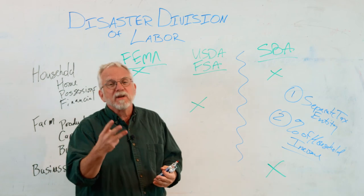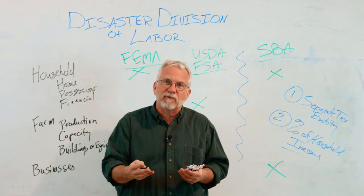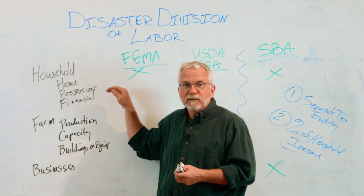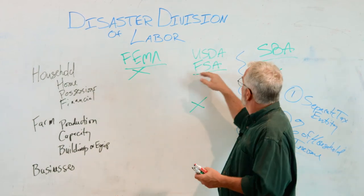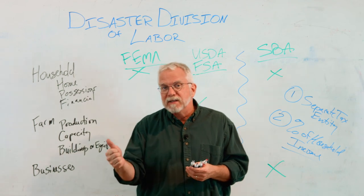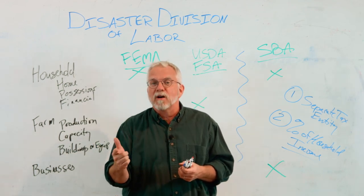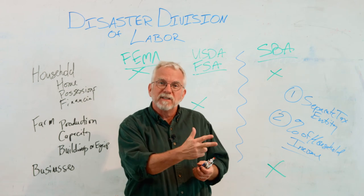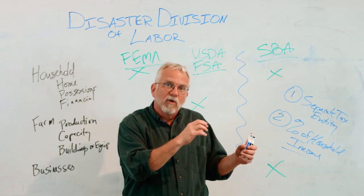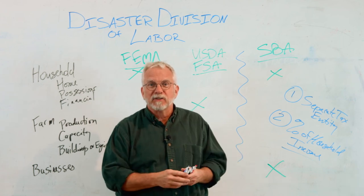To review: the three main agencies after a disaster are going to be FEMA, the FSA, and the Small Business Administration. FEMA is household. Farm Service Agency is going to be the farm. Small Business Administration is business, or in some cases the house. Thank you very much.